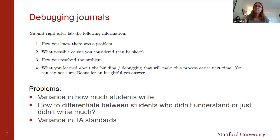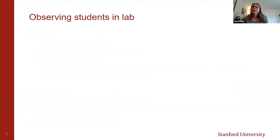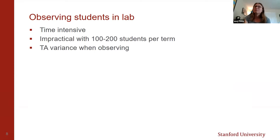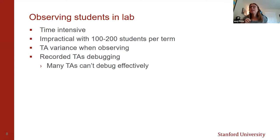We also looked into observing students in lab. This is a very time-intensive process — you can have each TA sit with a group for 10 minutes and watch them debug. That's going to be impractical with 100 to 200 students a term. Each TA doing separate students means again you have TA variants. Furthermore, we started by recording the TAs debugging at a training session, and it turns out a lot of our TAs can't debug effectively. So it was clear they needed a lot of training before they could even be used as valid observers.